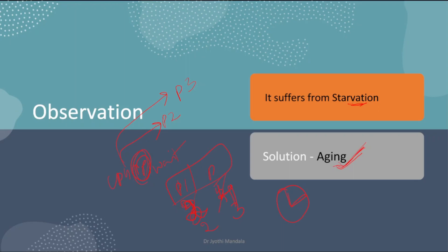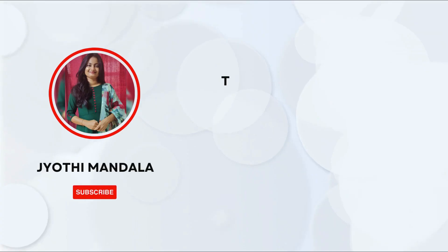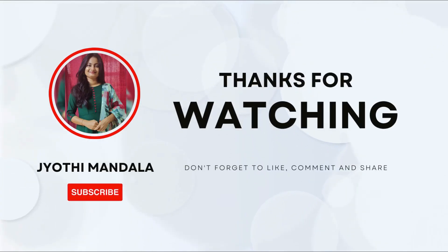I hope you all are clear with this concept of how the priority preemptive scheduling algorithm works. Now here is an assignment for you — try to calculate the average turnaround time and average waiting time. First draw the Gantt chart, keep track of the timer, and keep track of the ready queues. Let us all meet in the next lecture. Until then, thank you all.